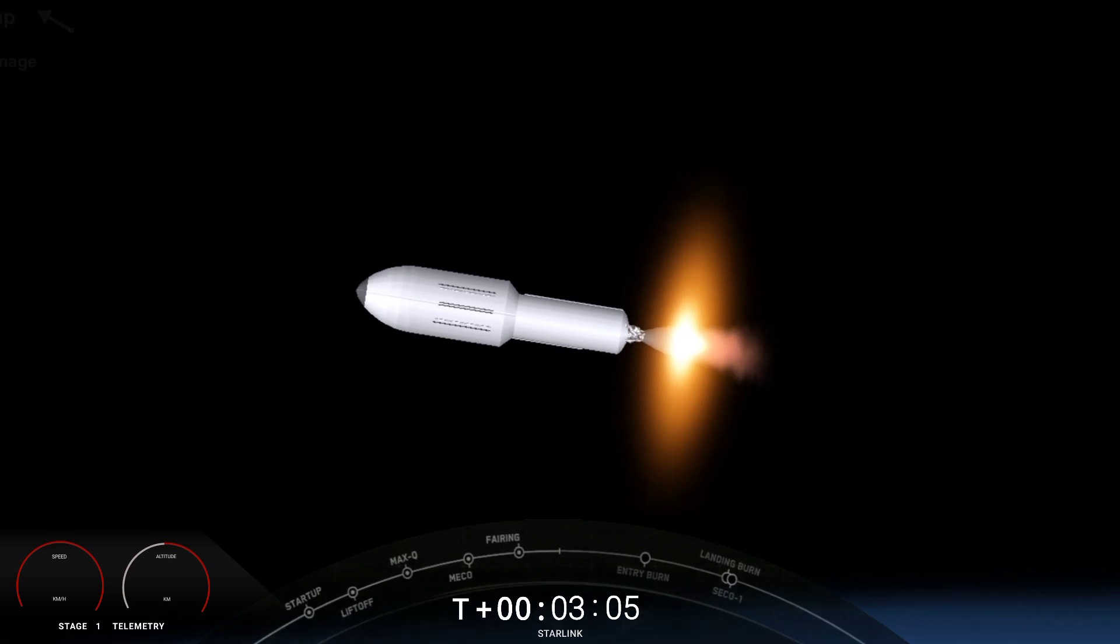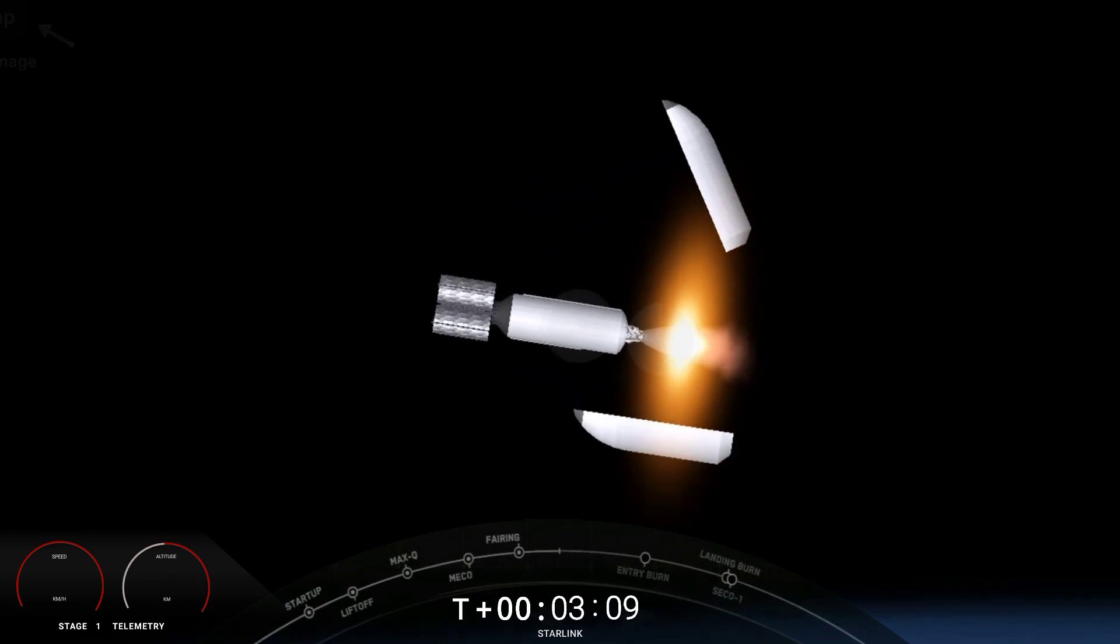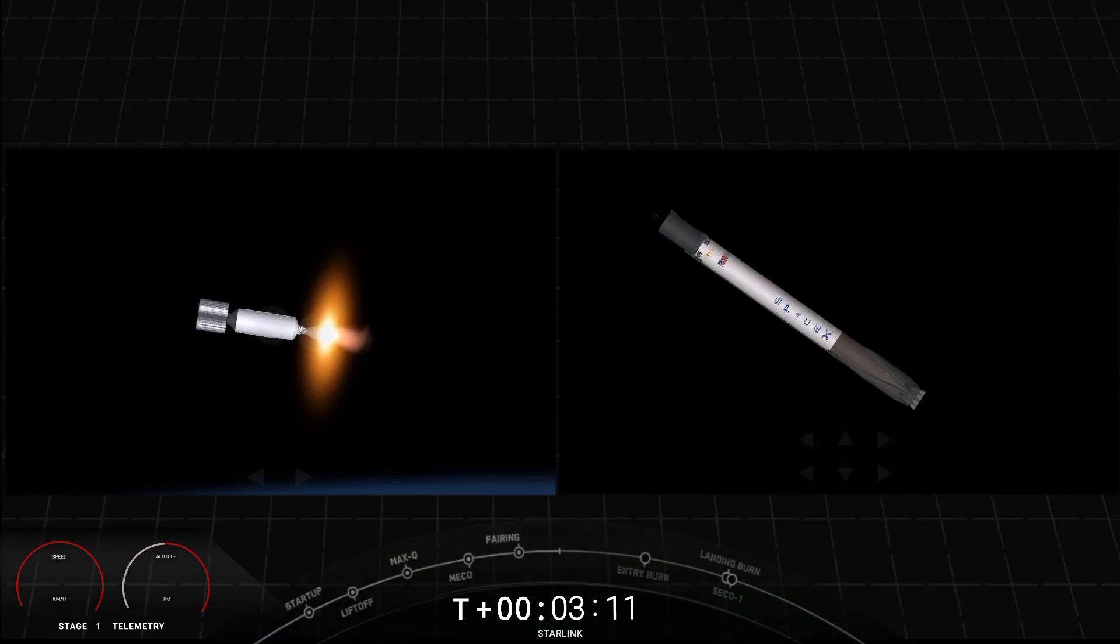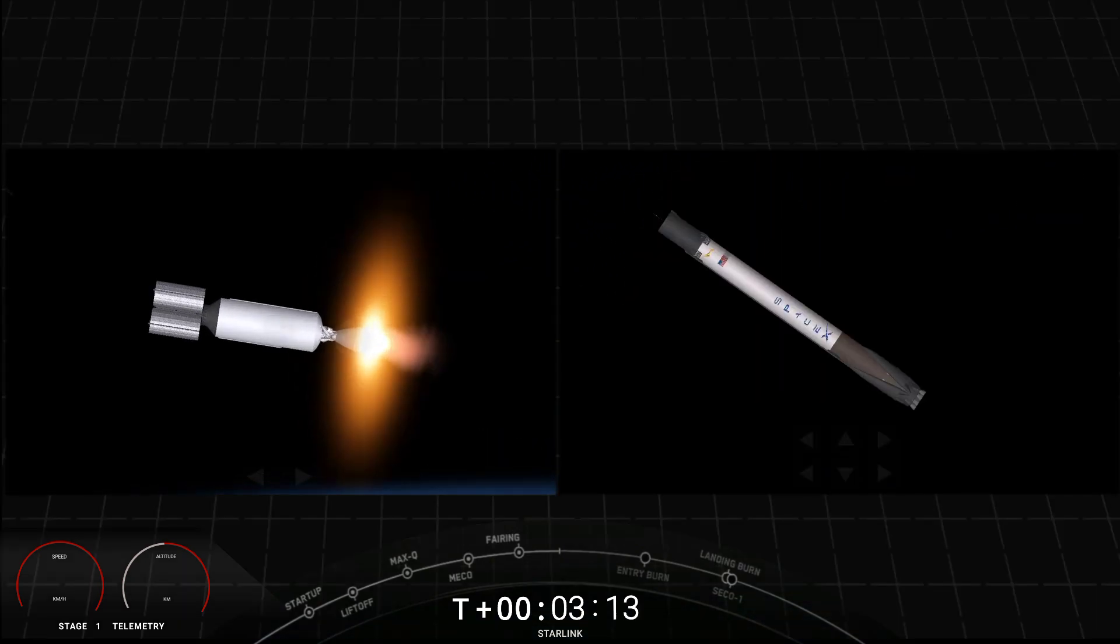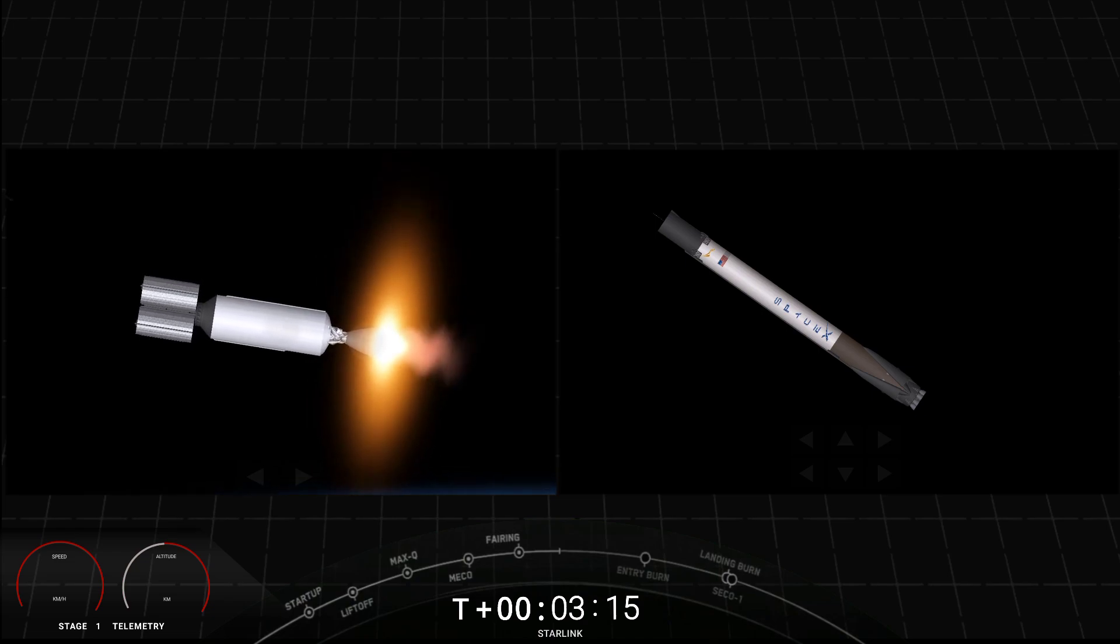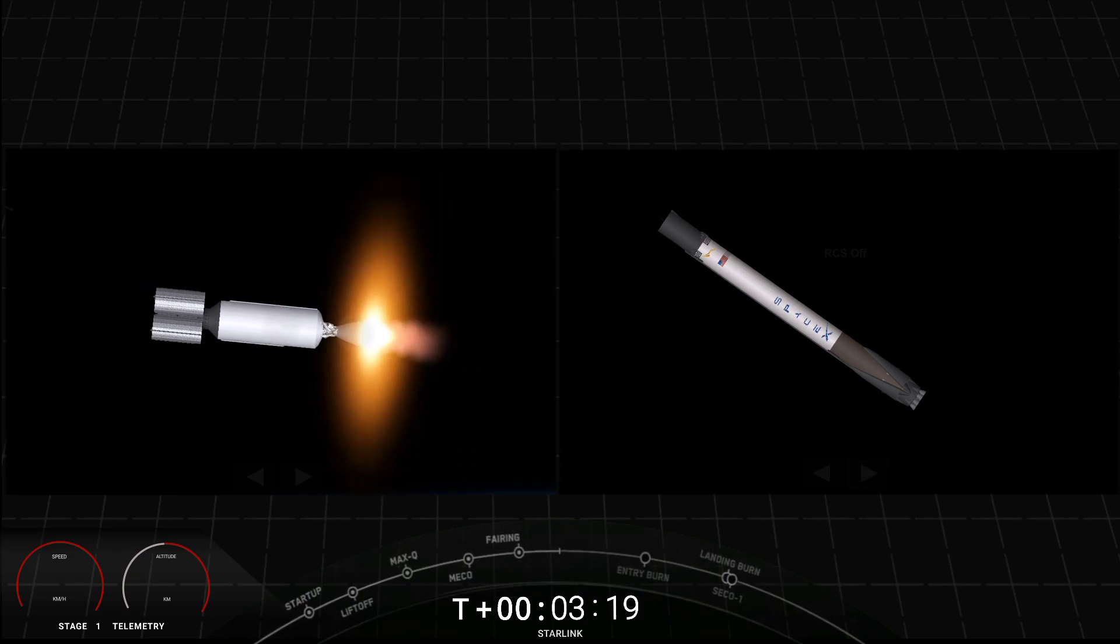Second engine start of the Merlin vacuum engine. The fairing halves have been deployed from the top of our second stage. We've been flying reflown fairing halves since 2019 and today's fairings are flight proven and we're going to be attempting to recover them when they return to Earth as well.